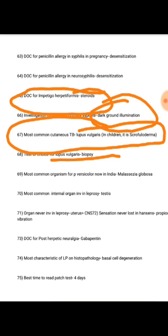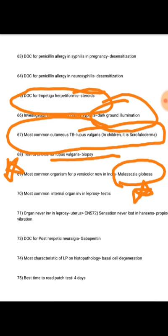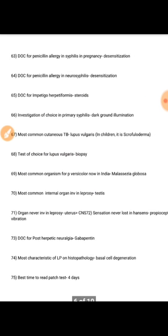Most common organism for pityriasis versicolor in India is Malassezia globosa — a recent important question for AIIMS and NEET-PG. Most common internal organ involved in leprosy is testis; organ never involved in leprosy is uterus. Sensation never lost in Hansen's disease is proprioception or vibration sense.